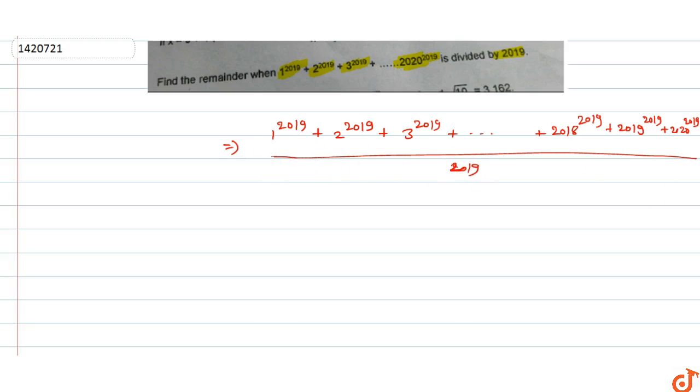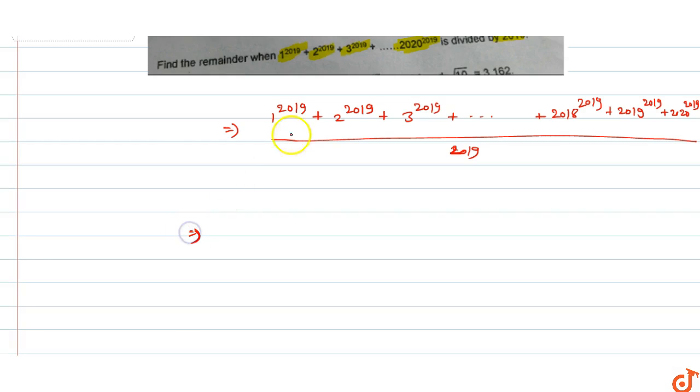This is equal to 1 raised to power 2019 plus 2018 raised to power 2019, plus 2 raised to power 2019 plus 2017 raised to power 2019, continuing until 2020 raised to power 2019, all divided by 2019.